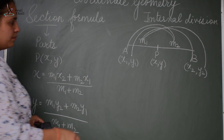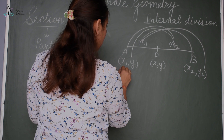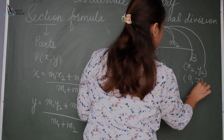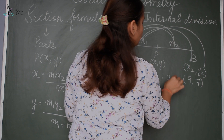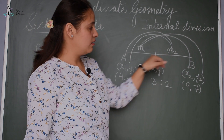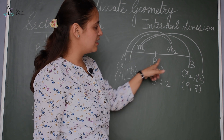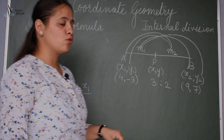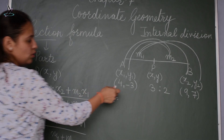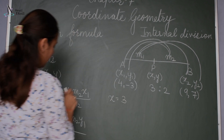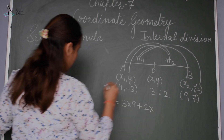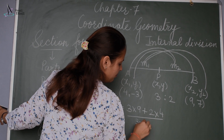Let us take an example. Let A = (4, -3) and B = (9, 7), and the ratio is 3:2. We have to find the coordinates of point P which divides AB in the ratio 3:2. So point P: x = (m1·x2 + m2·x1) / (m1 + m2) = (3×9 + 2×4) / (3 + 2).